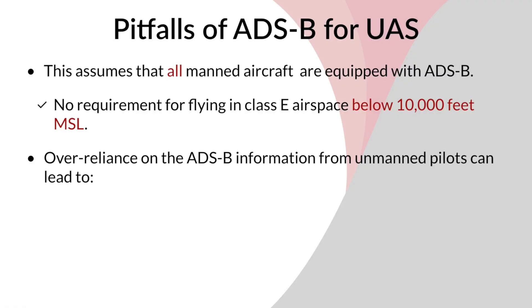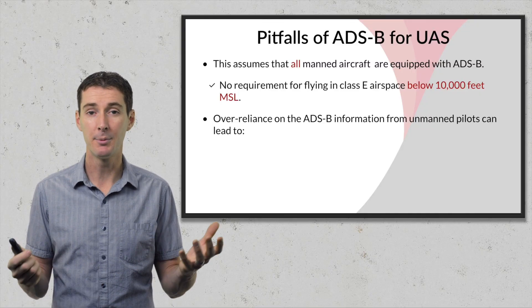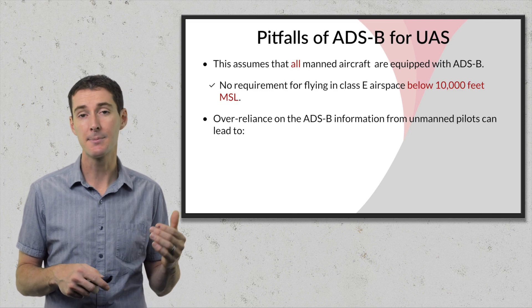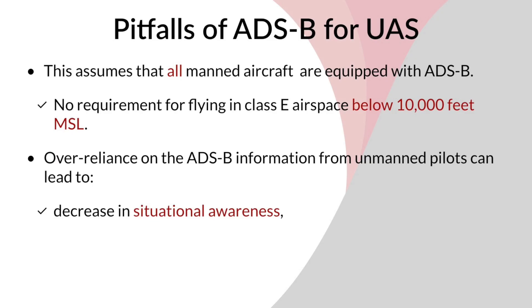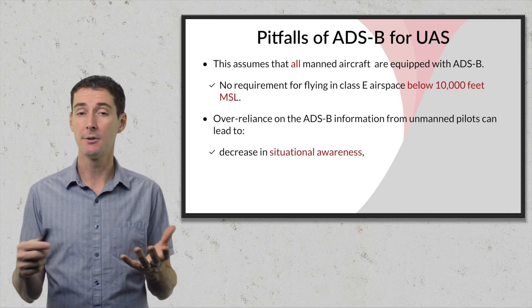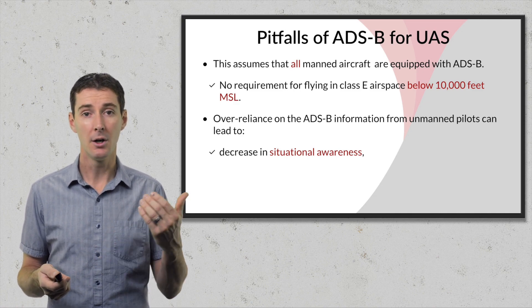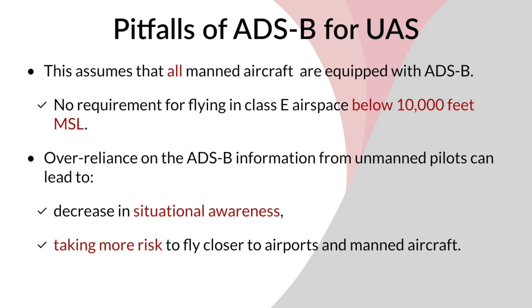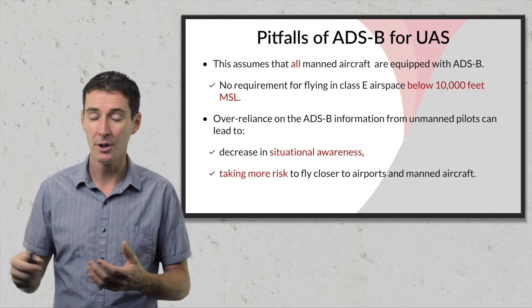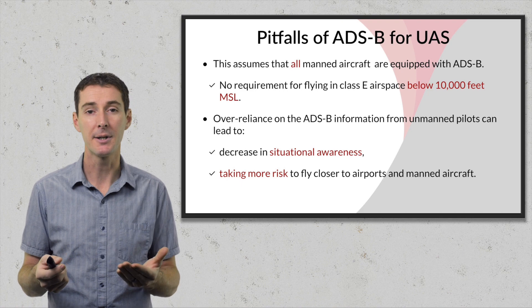This means we shouldn't expect to get traffic information for all aircraft flying where we operate under 400 feet. Also, you might have DJI's AirSense installed and think 'I don't need to pay attention because everything will pop up on my screen' — but that's incorrect. This is an over-reliance on technology, which is dangerous and well-known in manned aviation. It can lead to a decrease in situational awareness and to people taking more risks because they think the data will catch everything.